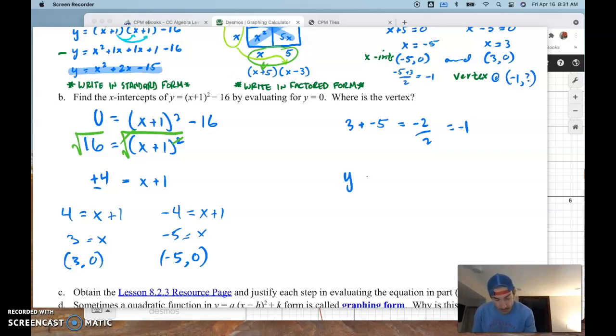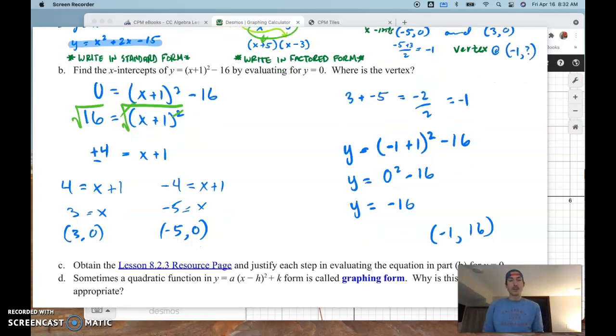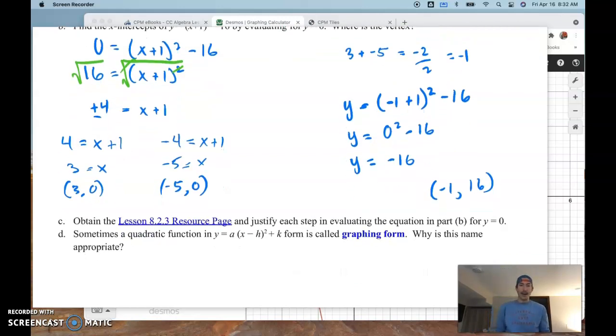If I plug in negative 1, we've got this minus that. So, negative 1 and 1 make 0. And then, voila, 0 squared is 0. And 0 minus 16 is negative 16. So, my vertex has to be at negative 1, 16. So, that could be an easier method, right? Now, I've got those three points that really, really, really help me sketch that graph.